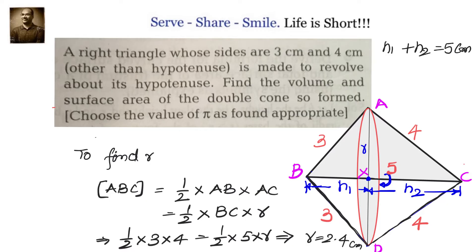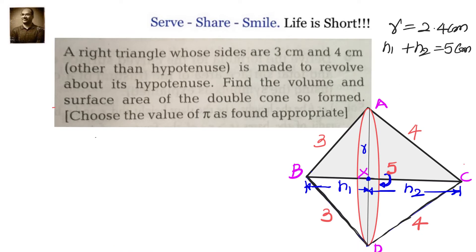Once we got r = 2.4 centimeters we can easily calculate the value of h₁ by using Pythagoras theorem. Once we know h₁ we can easily calculate h₂. h₂ is 5 minus h₁. So let us write down to find the value of h₁. To find h₁ we will take triangle ABX by Pythagoras theorem.